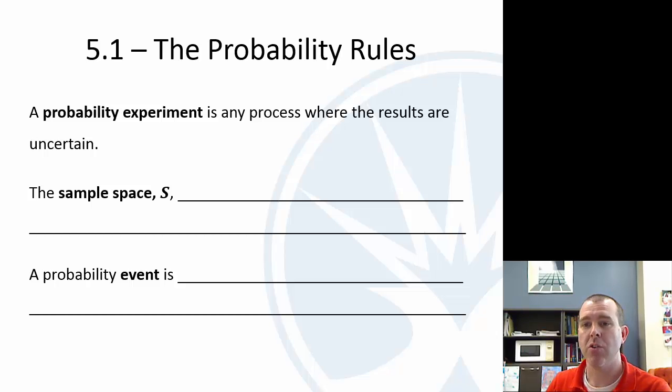So the sample space, we use capital letter S for that, is the set of all possible outcomes. A probability event is a single outcome from the sample space, a single thing that could happen in this probability experiment.